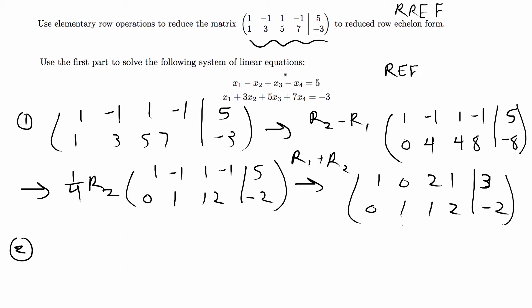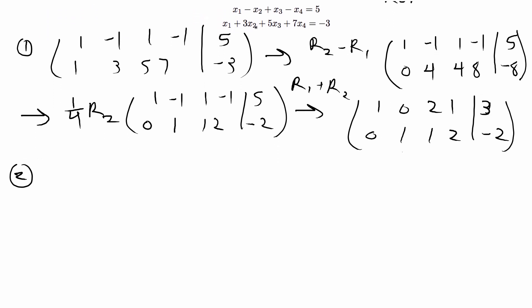For systems of linear equations you can either have one solution, infinite solutions, or no solution. In this problem we have two equations and four unknowns and we have the row reduced echelon form of the system of equations.